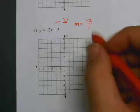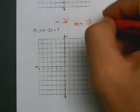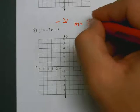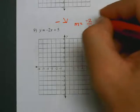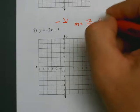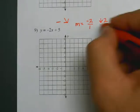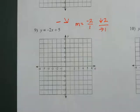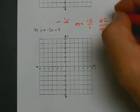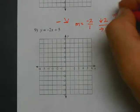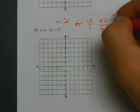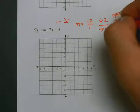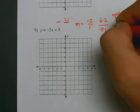Now direct the slope. It's negative 2 on the change of y, so it's going to go down 2. And it's always right 1 if you follow my steps. Name the opposite: the opposite would be up 2 and left 1.